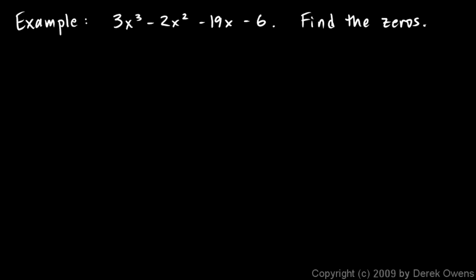Okay, here's another example that we will tackle with the rational zeros theorem. We're given this polynomial, 3x cubed minus 2x squared minus 19x minus 6, and we're told to find the zeros. So I look at this 6 and at this 3, and I think to myself, factors of 6 divided by factors of 3.